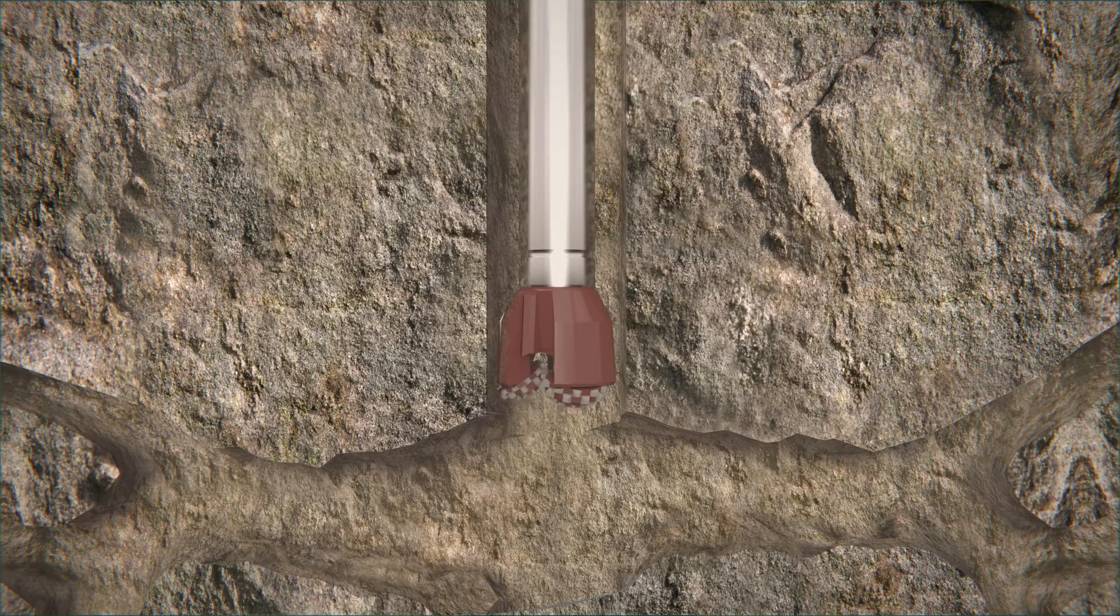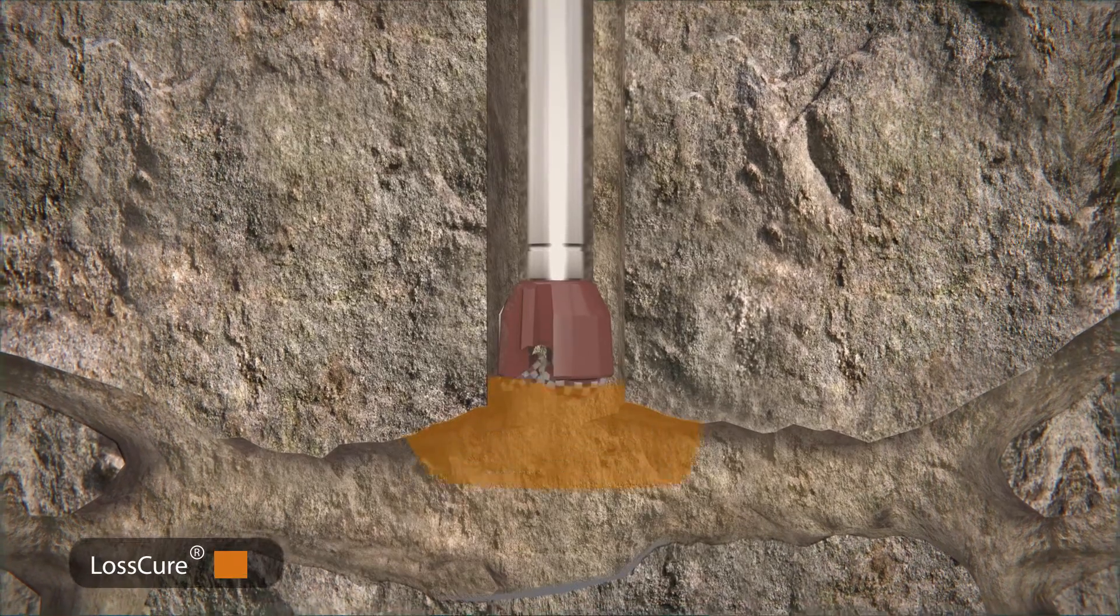Loss Cure is pumped down through the bottom hole assembly into the loss zone and forms a hard permanent seal.